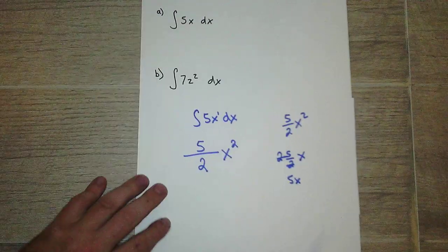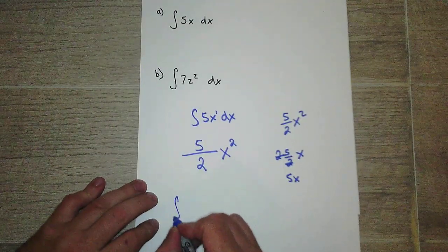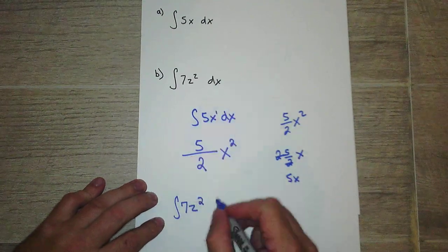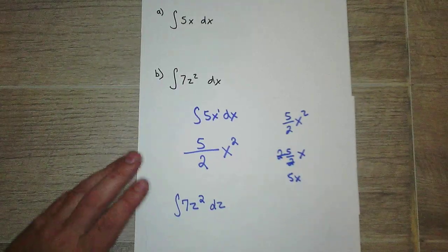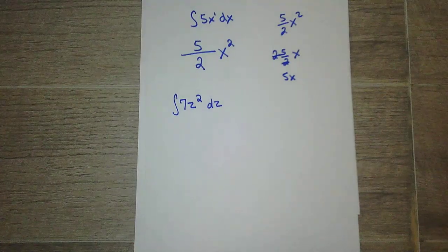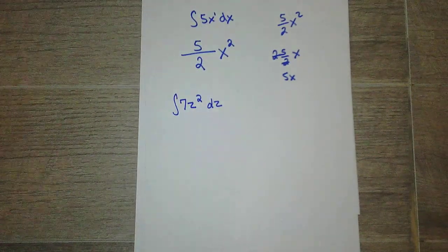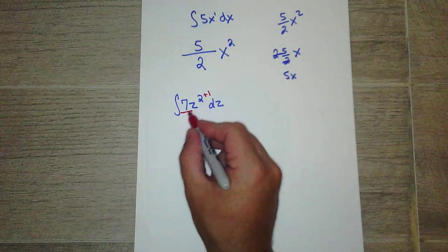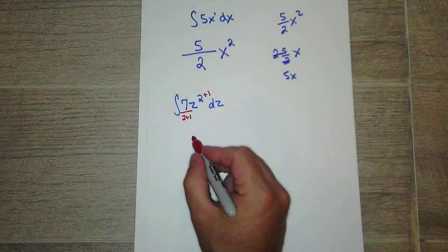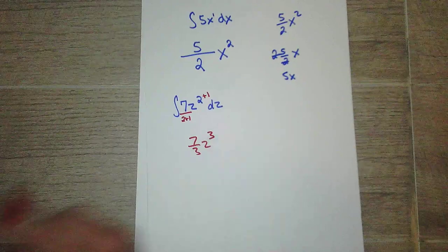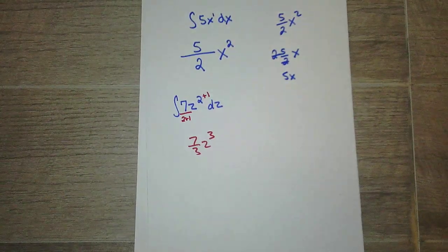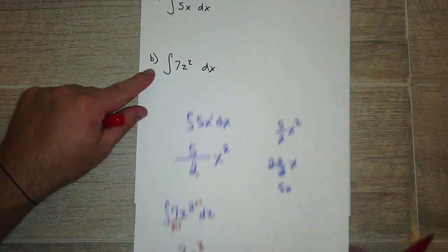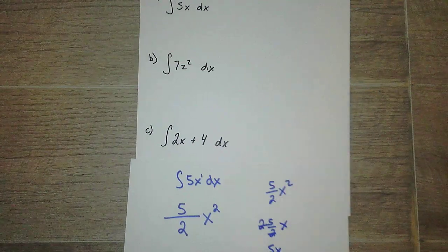Hopefully that made some sense. Let's try it again, let's try another one. We have integration of 7z squared. That actually should be a z, sorry, with respect to the variable z. Following the rules, we take 2, we're going to add 1, and then we divide by that same thing. So that's really all you do. So you get 7 over 3, z to the third. So if you're okay with that one, try this one on your own real quick. I'm of course going to go over it.